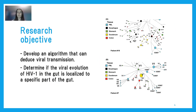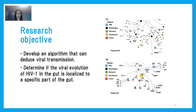In order to develop a treatment that can effectively cure HIV, we need to learn more about the way the virus transmits in the body. Our two research objectives are to develop an algorithm that can infer how HIV evolves and transmits — to the right over here are two examples of transmission networks developed by an algorithm from lab data. A second objective is to determine if any particular organs in the gut are of particular importance for the evolution or hiding of HIV.